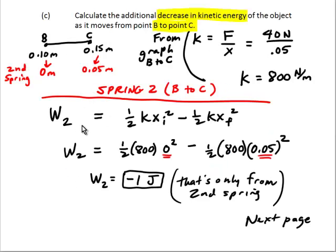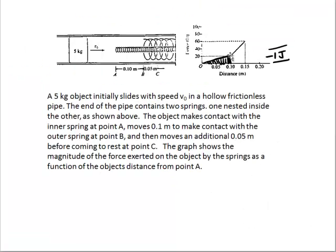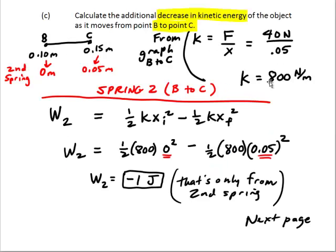So the work done by the second spring is 1 half kx initial squared minus 1 half kx final squared. You do have to find the new spring constant and you can do that from the graph and that is the slope of this line right here, 40 over 0.05. 40 over 0.05 is 800 newtons per meter. And that is k.